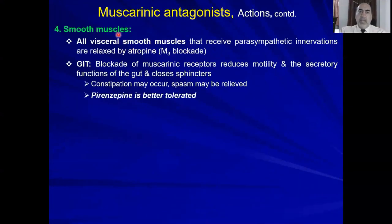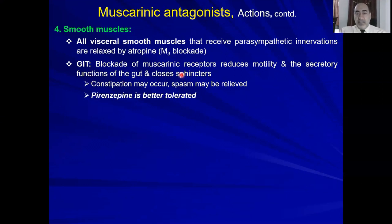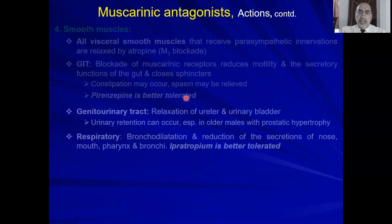On M3 — glandular smooth muscle: parasympathetic stimulation causes contraction of smooth muscles, so atropine causes relaxation of smooth muscle generally. This reduces motility and secretory function, since all secretions are increased by muscarinic receptor activation. Parasympathetic activation relaxes the sphincter — atropine does the opposite, closing the sphincter. This can lead to constipation, but also has an antispasmodic effect. Pirenzepine will be discussed after a couple of slides.